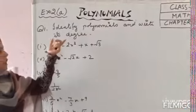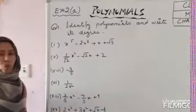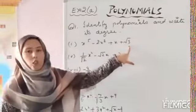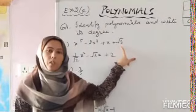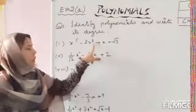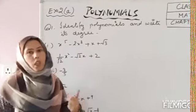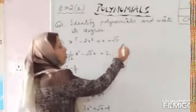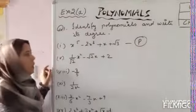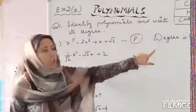Question number 1: identify polynomials and write their degrees. First expression: x⁵ − 2x³ + x + √3. The condition for a polynomial is that powers must always be positive. Here powers are 5, 3, 1, and √3 is a constant — a real number can be rational or irrational. So this is a polynomial, and its degree is 5.